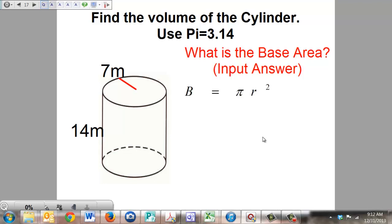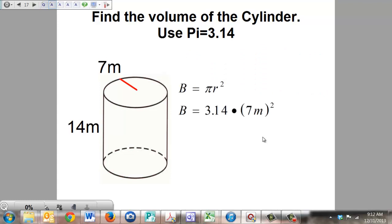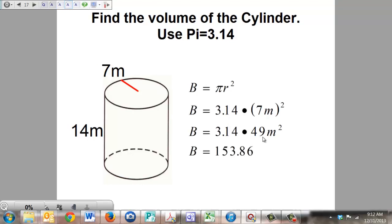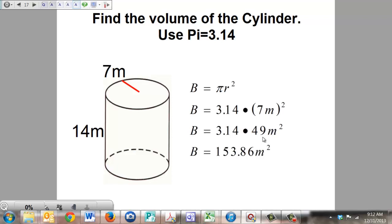Alright, pause the recording again and solve the volume of this cylinder. For this one, our radius is seven meters. That's what goes in our parentheses. When you square it, you get 49 square meters. Multiply that times your 3.14 and you get 153.86 meters squared.